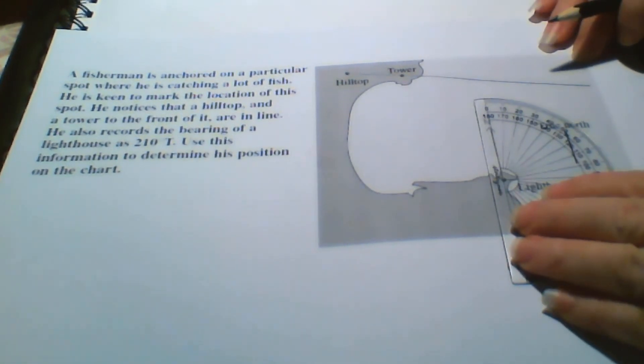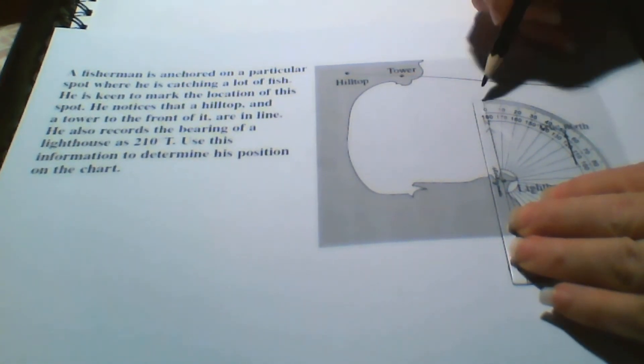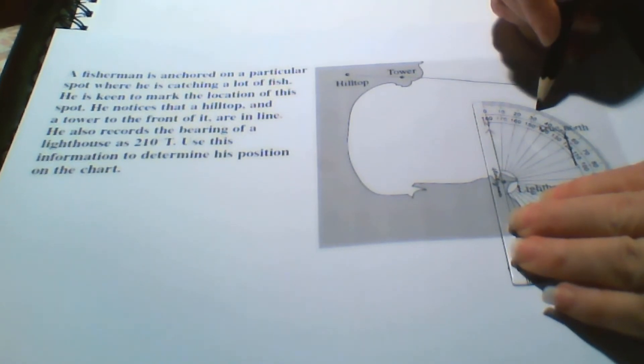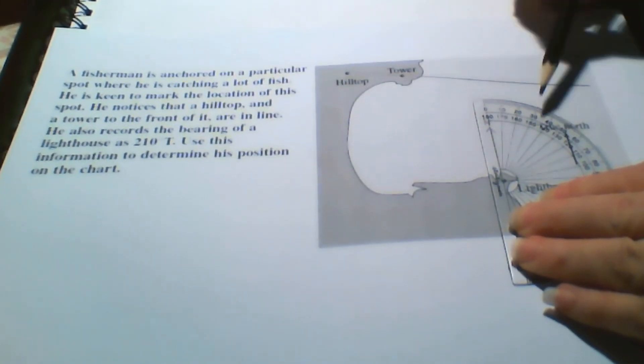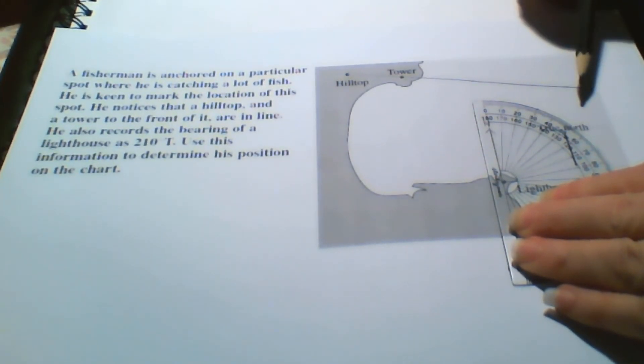So we get our protractor and we measure on the 30 degrees. So if we were at the lighthouse looking out at the boat it would be 30 degrees. If we're in the boat looking back at the lighthouse it's 210 degrees true.